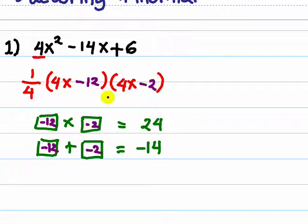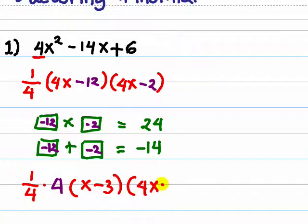So we have a factorization of the trinomial, but if you want to have a simpler factorization, you can factor out 4 from this. So you will have 1 fourth, we factor out 4, and over here we have x minus 3 and 4x minus 2.